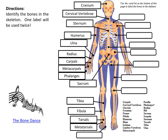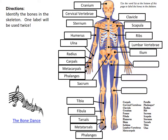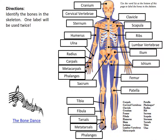Continuing: your metatarsals are your foot bones, and your phalanges again are your toes. Then we have your clavicle, which is your collarbone; your scapula, your shoulder blade; your ribs; your lumbar vertebrae, which is your lower spine; your ilium, part of your pelvis; your ischium, the lower part of your pelvis; your femur, your upper leg bone; and your patella, which is your kneecap.